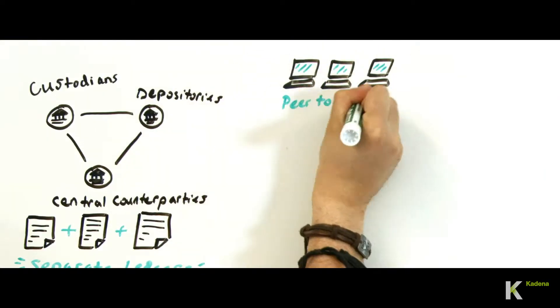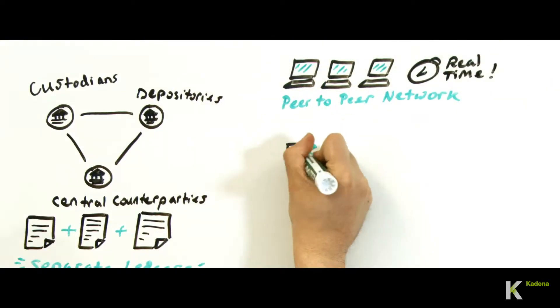Computers are connected to a peer-to-peer network, maintaining the same code, database records, and receiving transactions in real time.